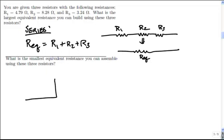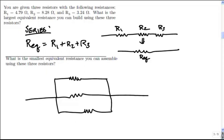So we can draw something that looks like that. And this will actually lead to the smallest equivalent resistance, R1, R2, and R3.